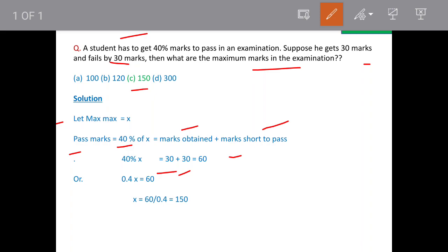So that means 60 marks are equal to 40% of maximum marks. So that means 0.4X is equal to 60. And when you simplify this, you'll get X is equal to 150. That means maximum marks are 150.